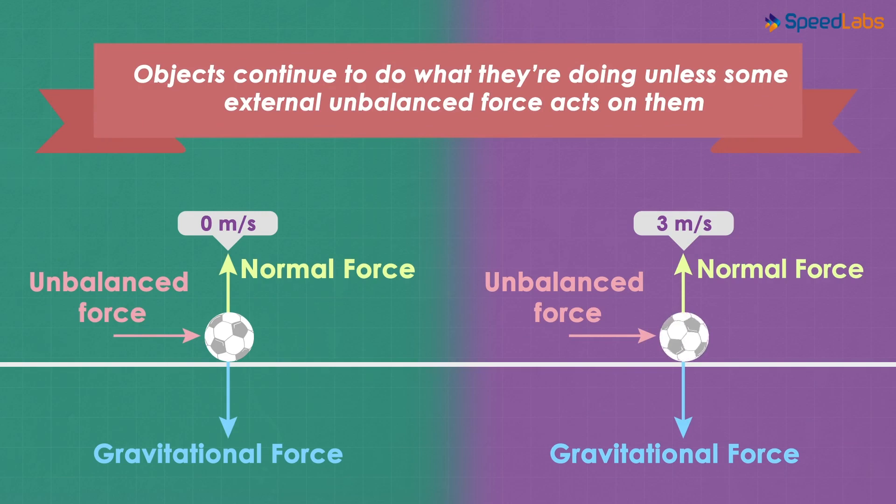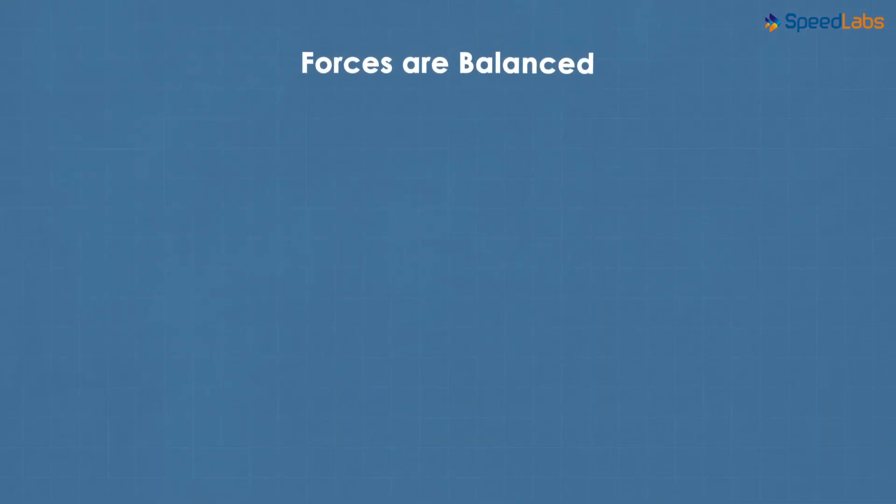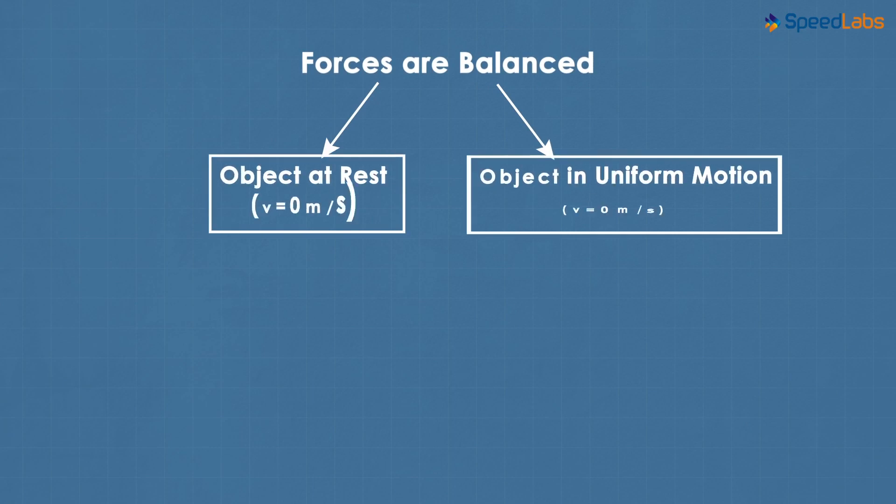We can also understand this using a simple diagram. If the forces are balanced, there can be two cases. An object may be at rest or an object will be in motion at a non-zero constant velocity in a particular direction. These can be the only two cases when the forces are balanced.